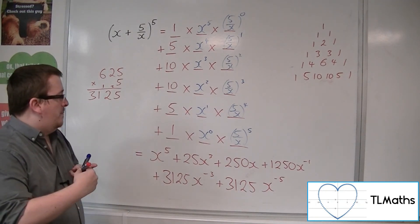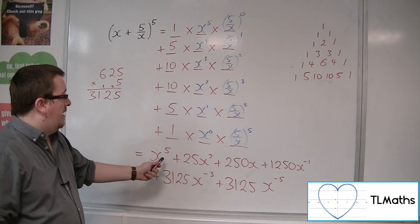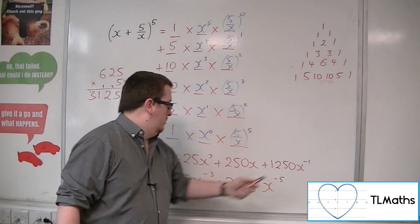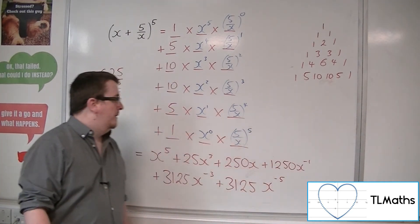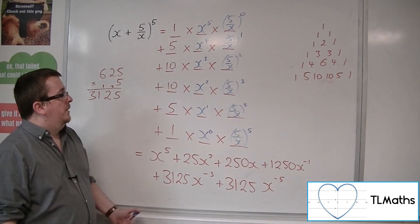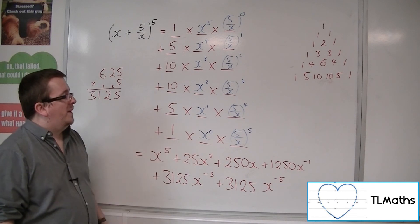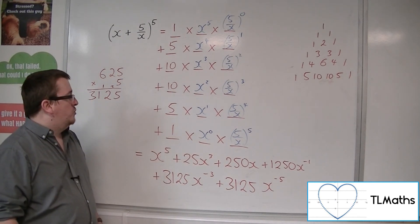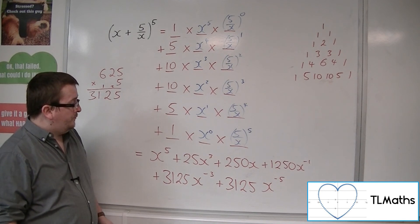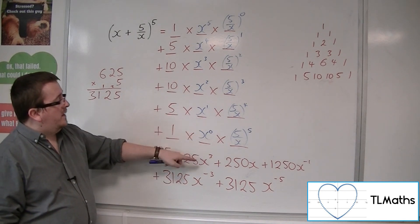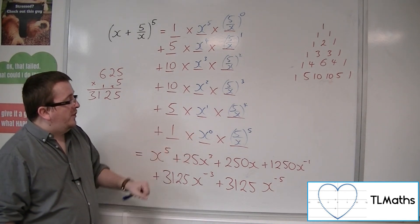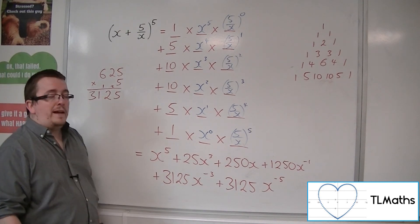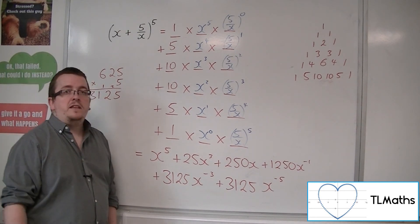Notice how the powers of x here are going down by 2 each time — 5, 3, 1, minus 1, minus 3, minus 5 — so you can follow that pattern through. Really the most complicated bit, once you see the pattern, is making sure you're getting the numeracy right. So make sure you've got long multiplication in the bag just in case it's required.